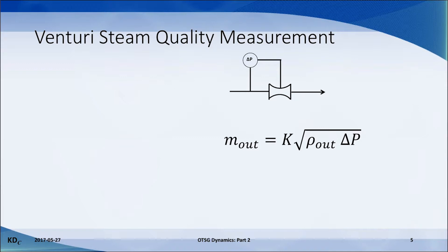But with the OTSG, we have an accurate measurement of the water flow rate into the tube, and we know the venturi pressure drop. So we flip the venturi equation around and we get an expression for the density of the outlet fluid. Then we can go to the steam tables and find the steam quality that matches this density.